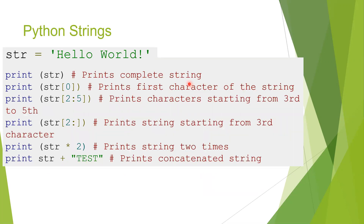Now next is string. Remember, for a string either single quote or double quote you can use. So just pause the video and start your Python. Open your Python if you've already installed it on your laptop or mobile. Press str equals to 'hello world' and print. Remember for the print command, always a small bracket is used. So print(str) means the full string will be printed — full 'hello world' will be printed.